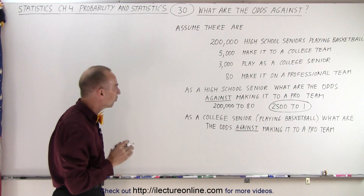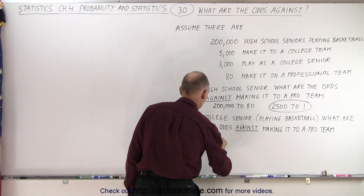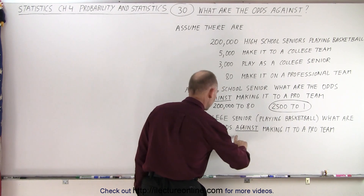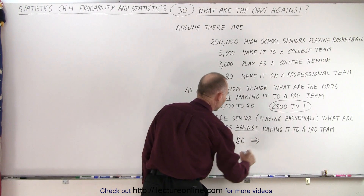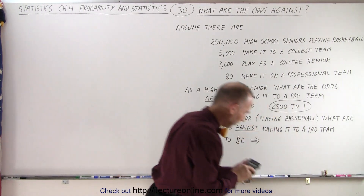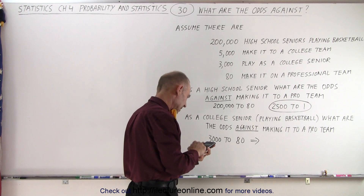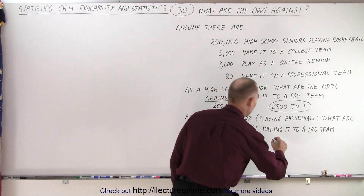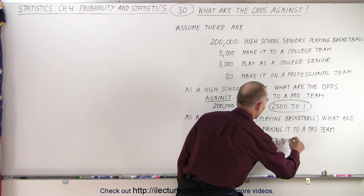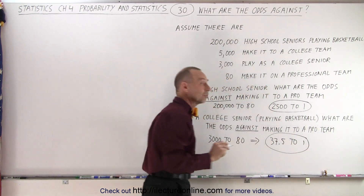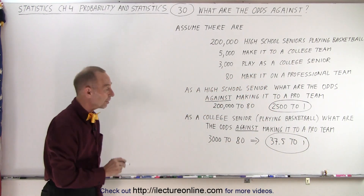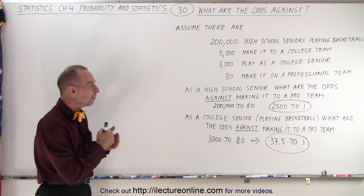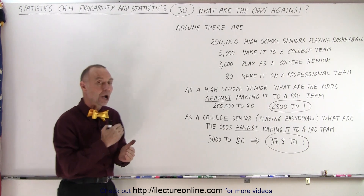How about as a college senior? Then we would do 3,000 to 80, and if we divide both sides by 80, that gives us 37.5 to 1. So that is the odds against a senior in college playing basketball making it to a professional team. That is how we represent odds against.